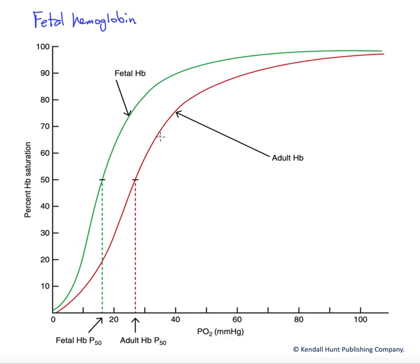We note that the adult hemoglobin isoform has a lower affinity, as indicated by the right-ward shifted curve. This is indicated and standardized through use of the P50 value.